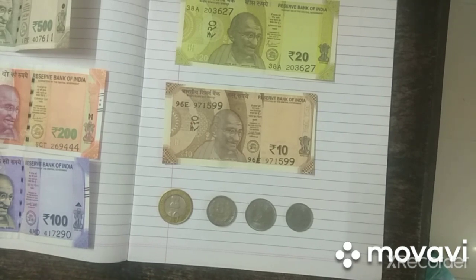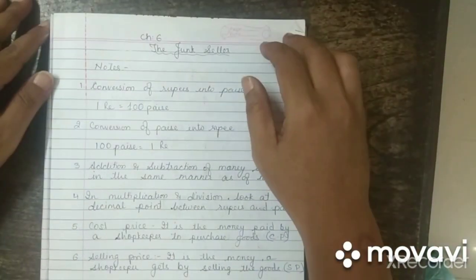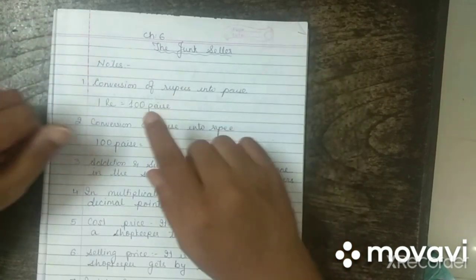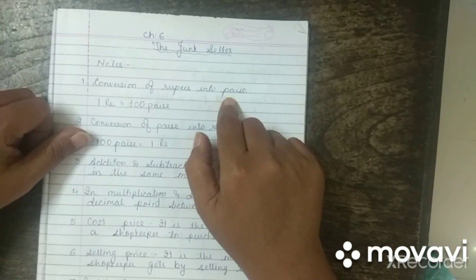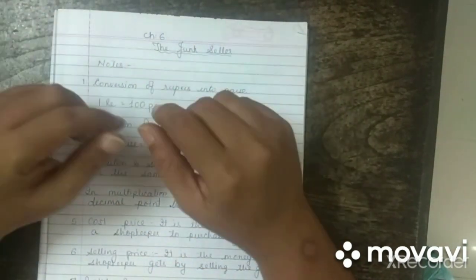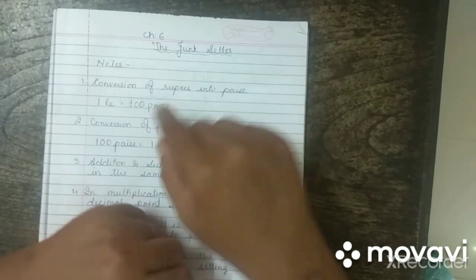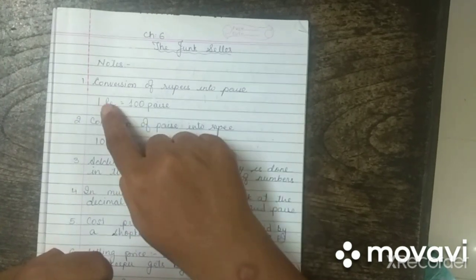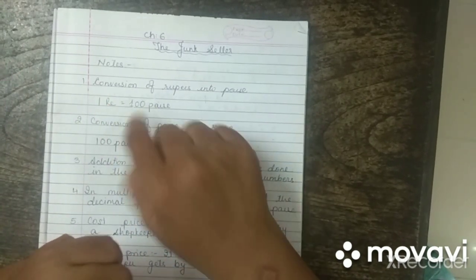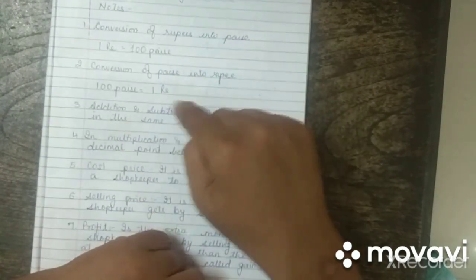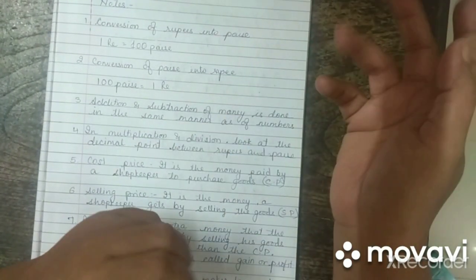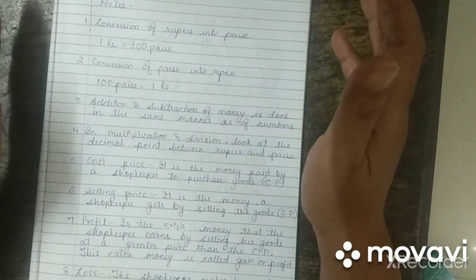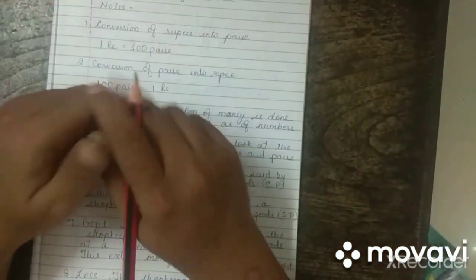These are the notes you need to remember. This is the conversion of rupees into paisa: 100 paisa make up one rupee. One rupee is made up of 100 paisa. The addition and subtraction of money is done in the same manner as we do with numbers.